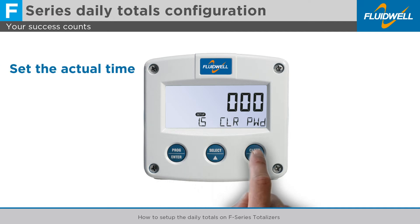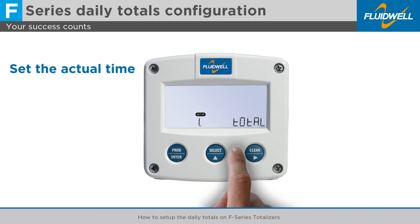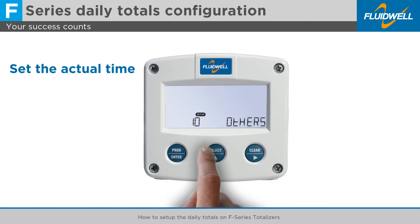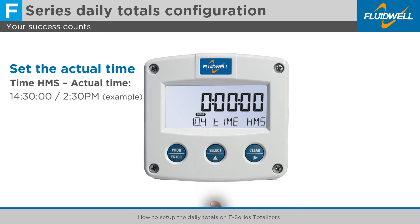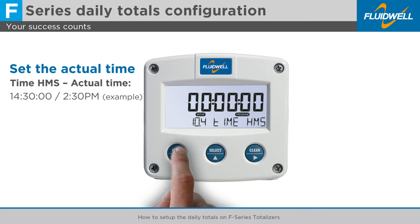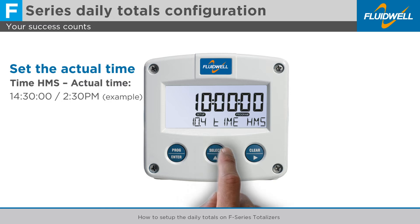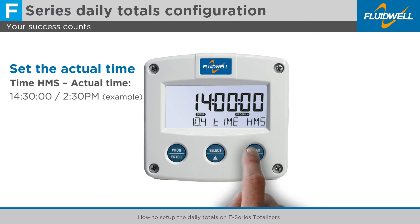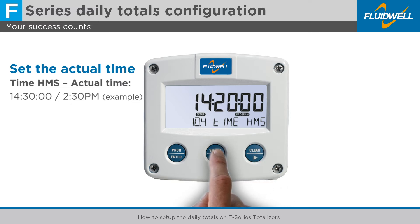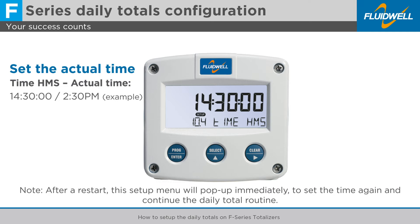Use clear or prog to go to menu 10, others. Press select to go to menu 10.4, time HMS, to set the actual time with a 24-hour clock. Press prog to change the time setting. Use select and clear to set your actual time — for this example, 14:30. Press prog to store this setting. After a restart, this setup menu will pop up immediately to set the time again and continue the daily total routine.